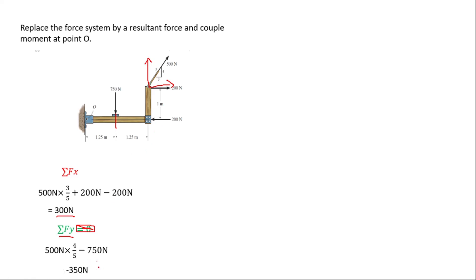The negative sign simply shows the direction in which the sum of y-component forces moves. Now we need to find the resultant magnitude, which is the square root of 300 squared plus negative 350 squared.